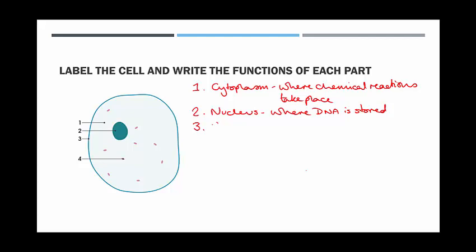Number three is the cell membrane, and the cell membrane controls what's able to pass in and out of the cell.